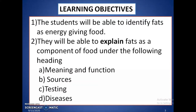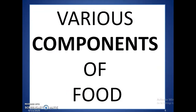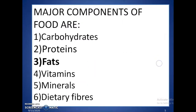The learning objectives to be attained at the end of the lesson are: students should be able to identify fats as energy-giving food and explain fats as a component of food under the headings of meaning, sources, testing, and diseases. There are various components of food — carbohydrates, proteins, fats, vitamins, minerals, and dietary fibers — and today we are going to discuss fats for Class 6.